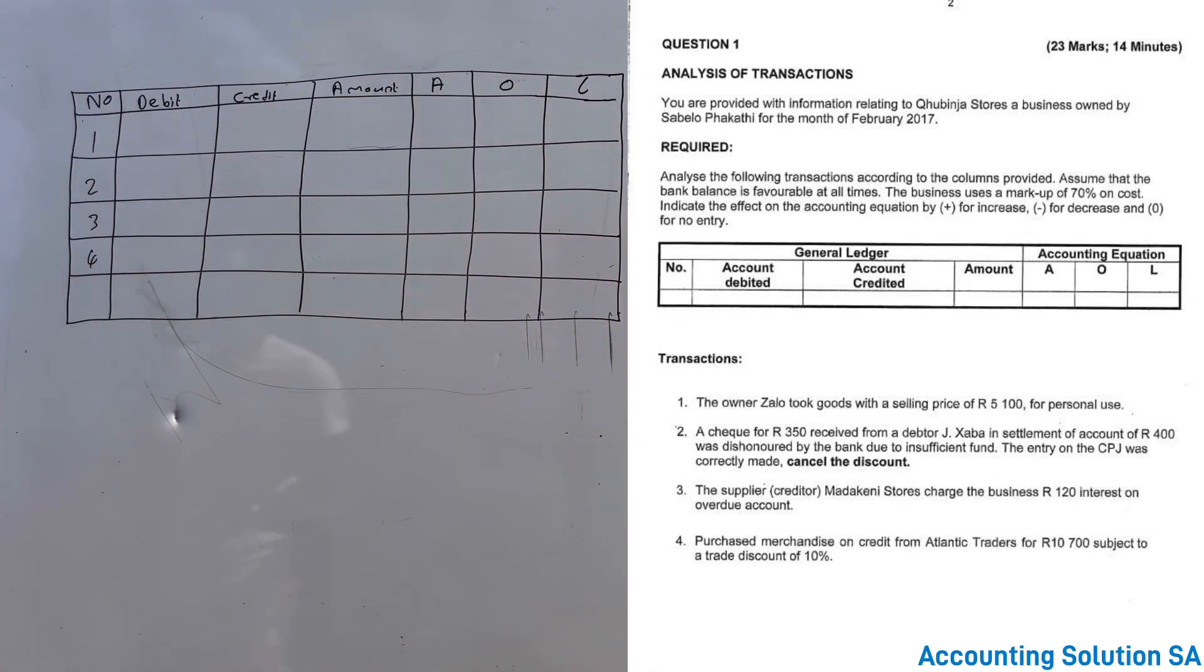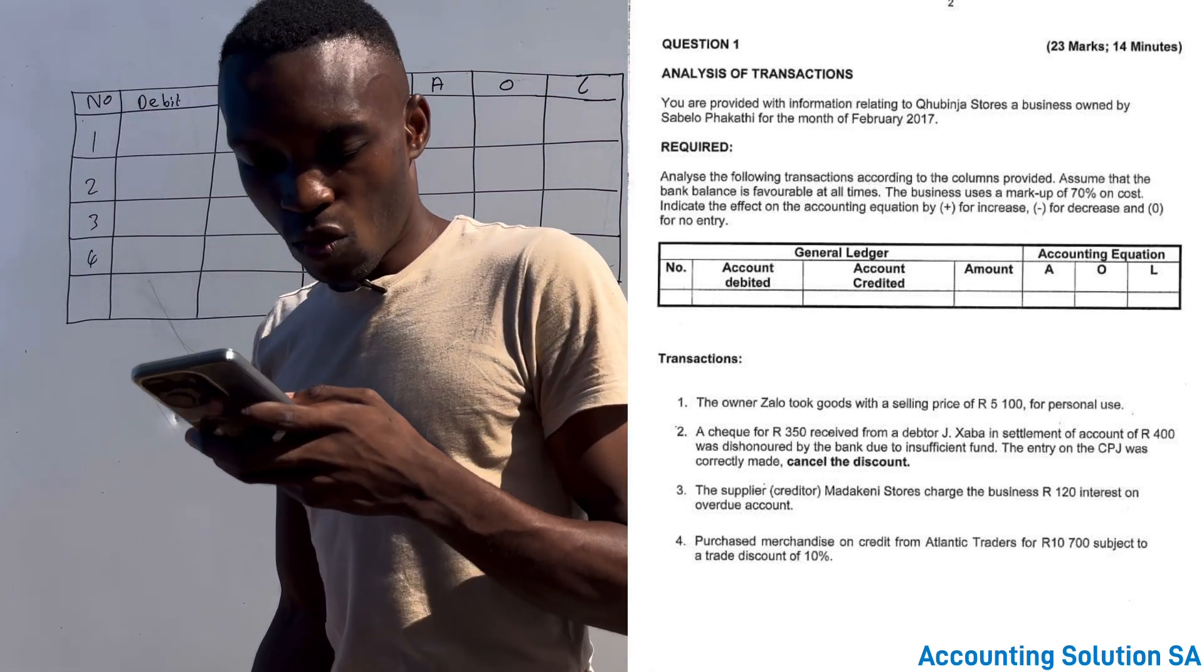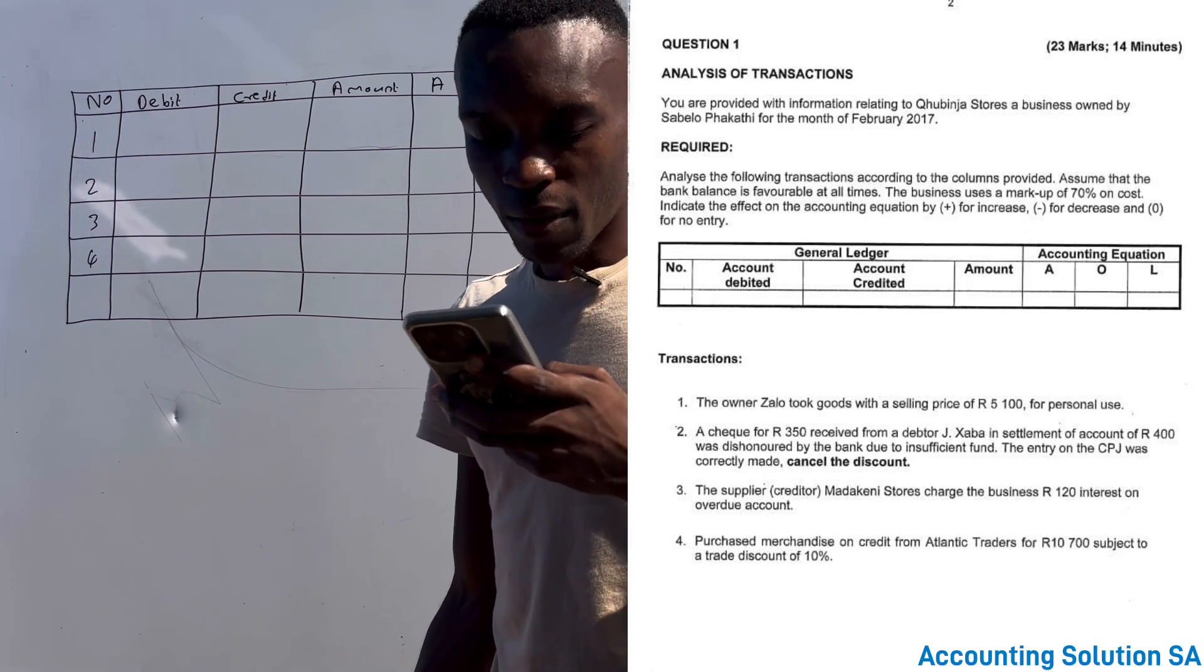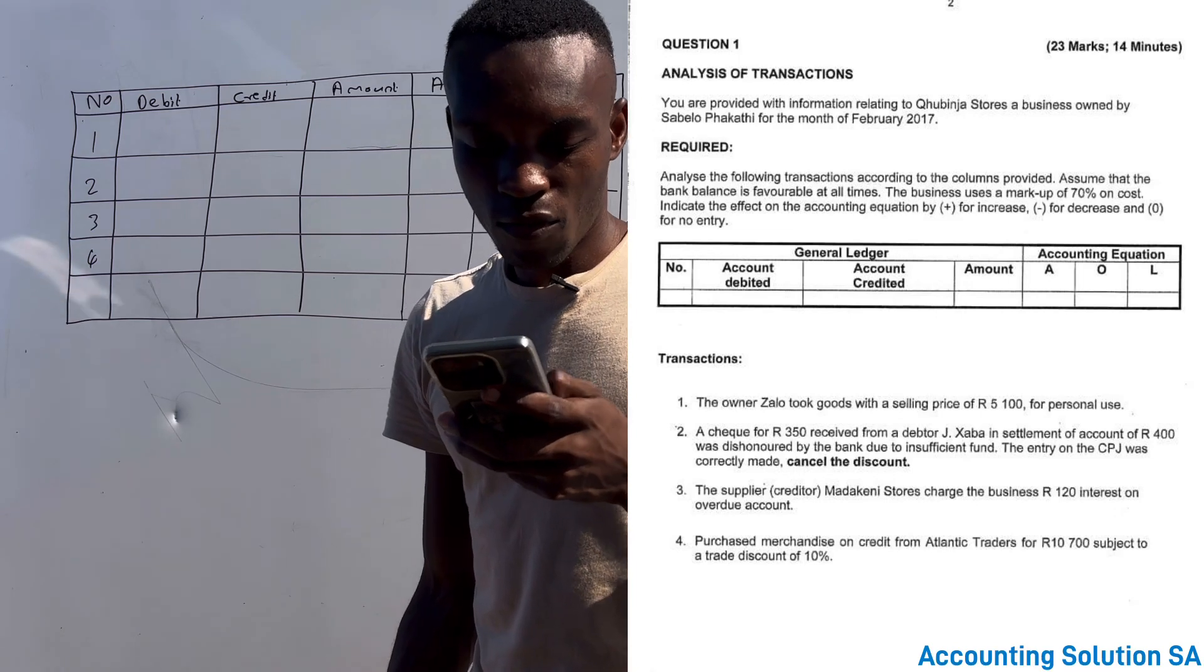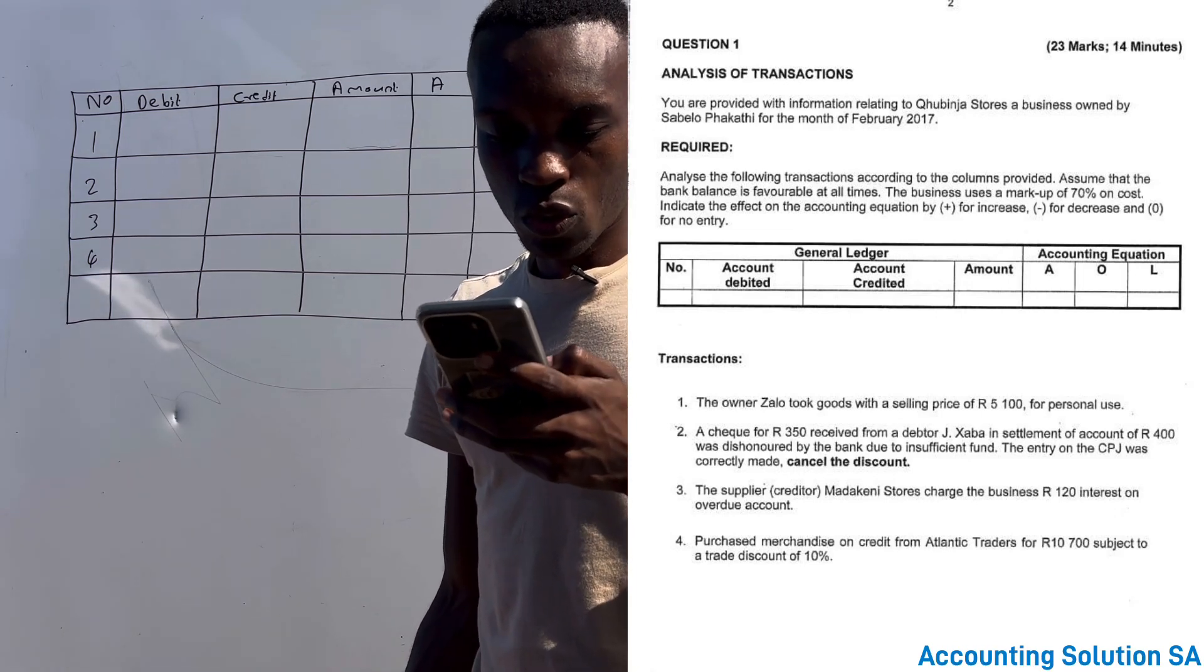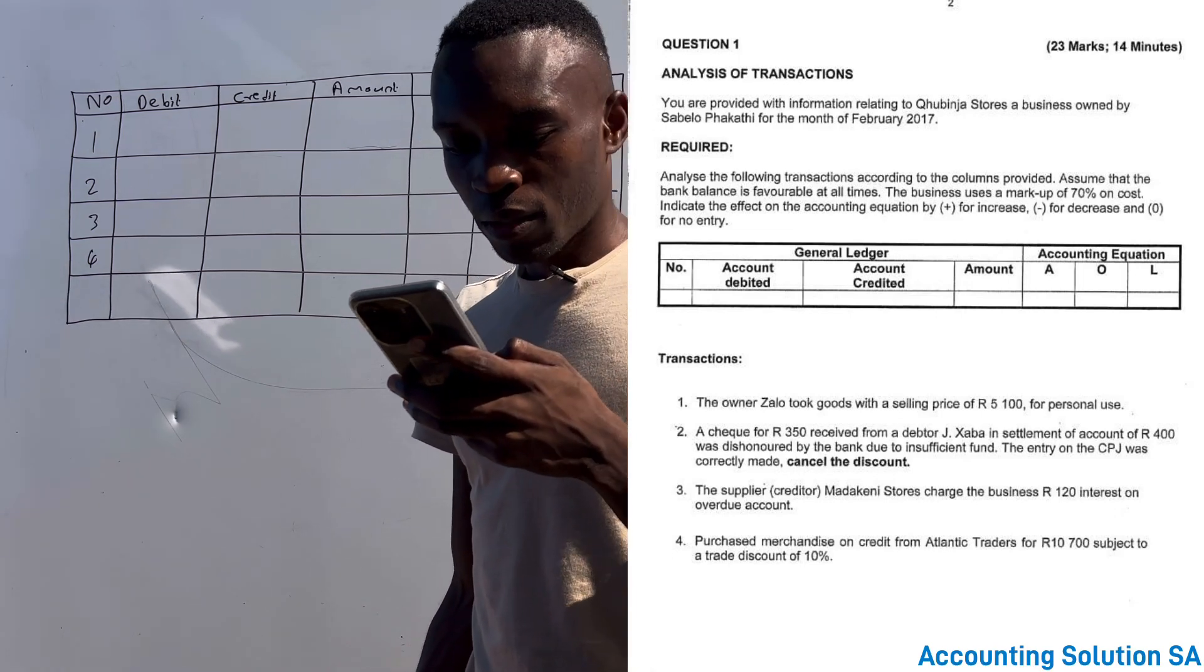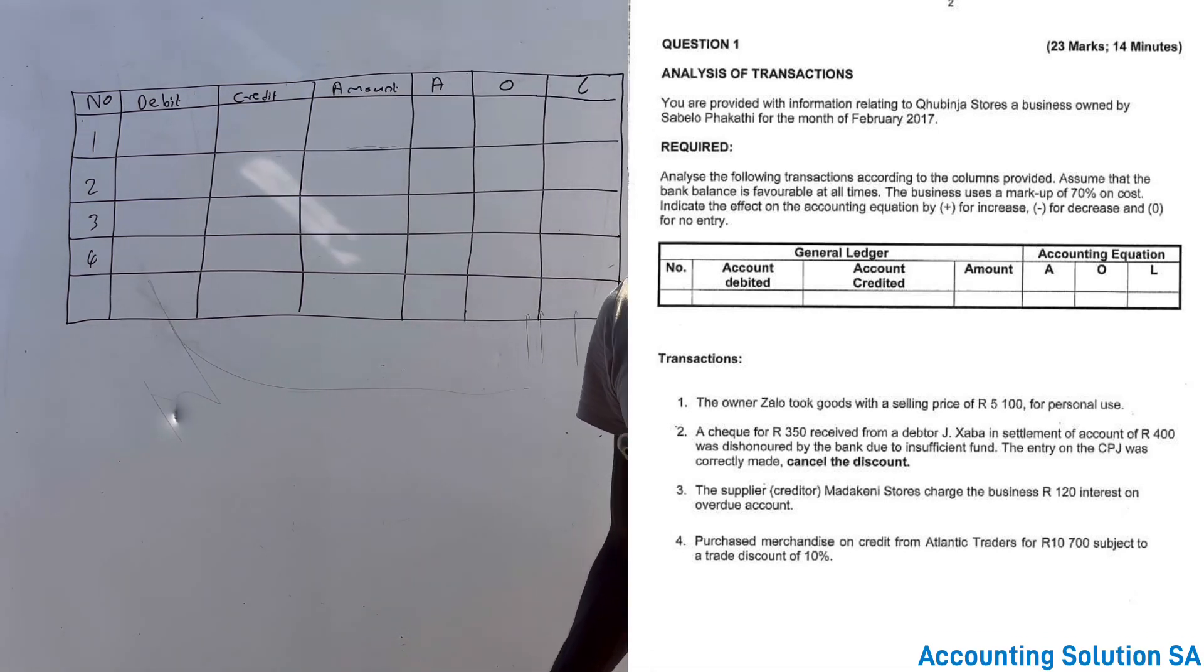This is the table that they gave us which I already drafted here. Transaction number one says that the owner Zalo took goods with a selling price of 5,100 for personal use. The owner took goods.